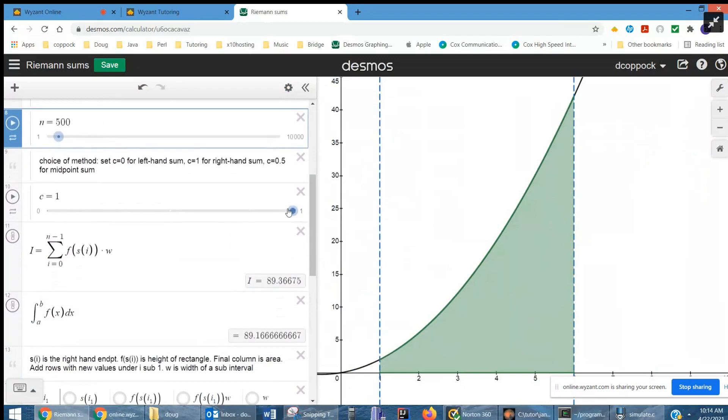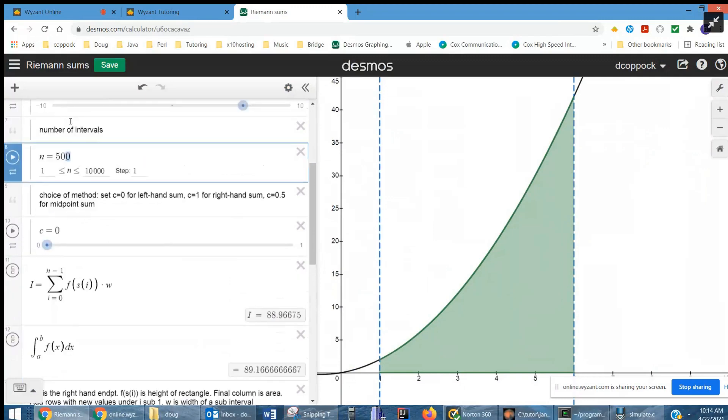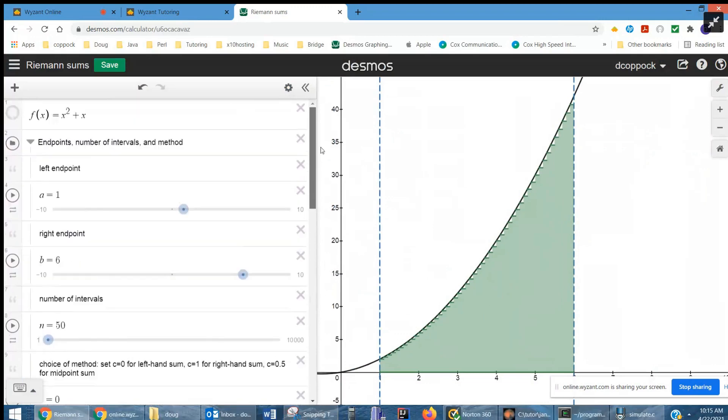This C value controls whether you have right-hand endpoints or left-hand endpoints. Let me change this back to 50. Okay, and now if you use left-hand endpoints, it looks like we've got an underestimate. All right.